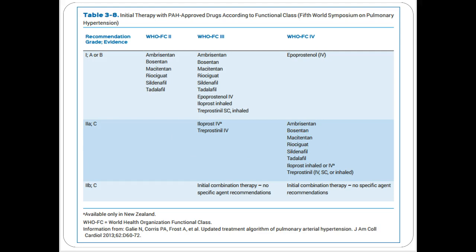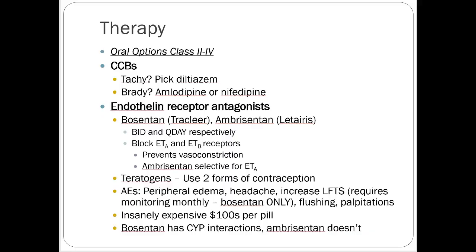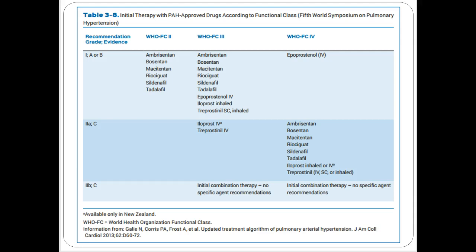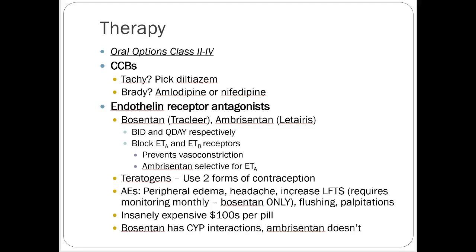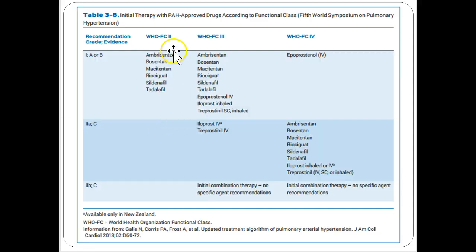I'm not going to ask you to manage a pulmonary hypertension patient clinically — just recognize the medications and understand mechanisms of action. Calcium channel blockers have historically been used but aren't really recommended anymore, though occasionally used for mild cases. First-line therapy falls on endothelin receptor antagonists and PDE-5 inhibitors.